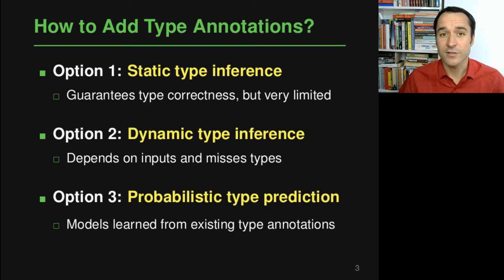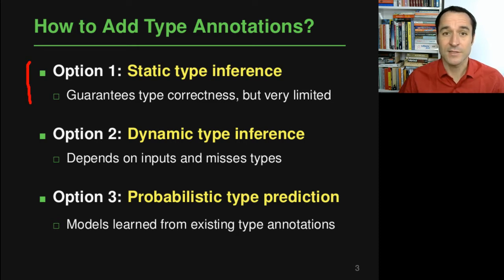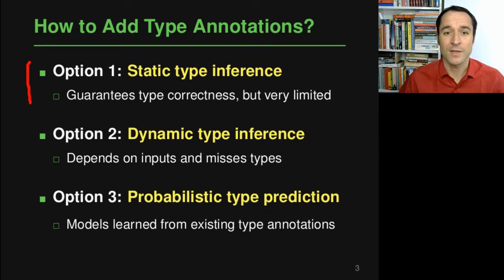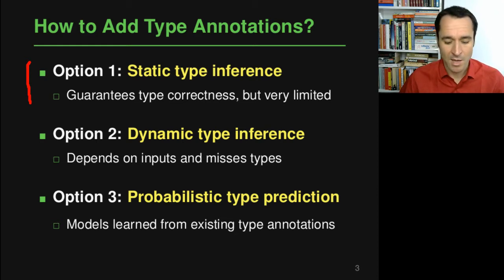There are essentially three options. Option number one is static type inference — a static analysis that typically works conservatively, so whenever it suggests a type it is guaranteed to be correct. But in practice these tools turn out to be pretty limited because dynamic languages are inherently hard to analyze.